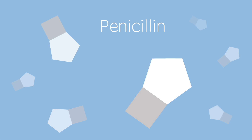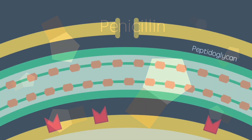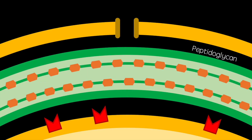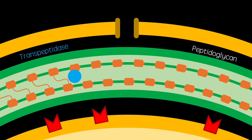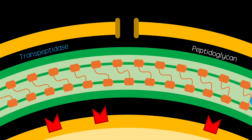But how does it work? Surrounding bacterial cell membranes are cell walls made of peptidoglycan. The structural integrity of these are maintained by transpeptidase enzymes. These enzymes connect the sugar molecules together via short peptide molecules, thus forming the peptidoglycan.